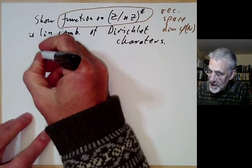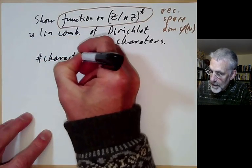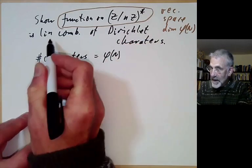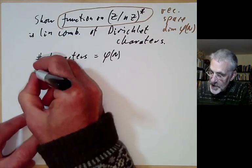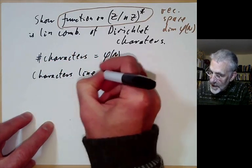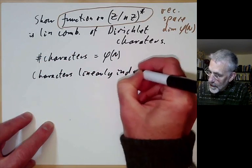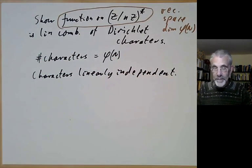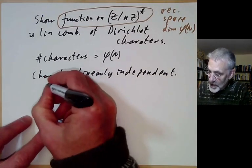The number of characters is also phi of n. So to show every function is a linear combination of characters, all we need to do is show the characters are linearly independent as vectors in the vector space. We're going to show they are in fact orthogonal.